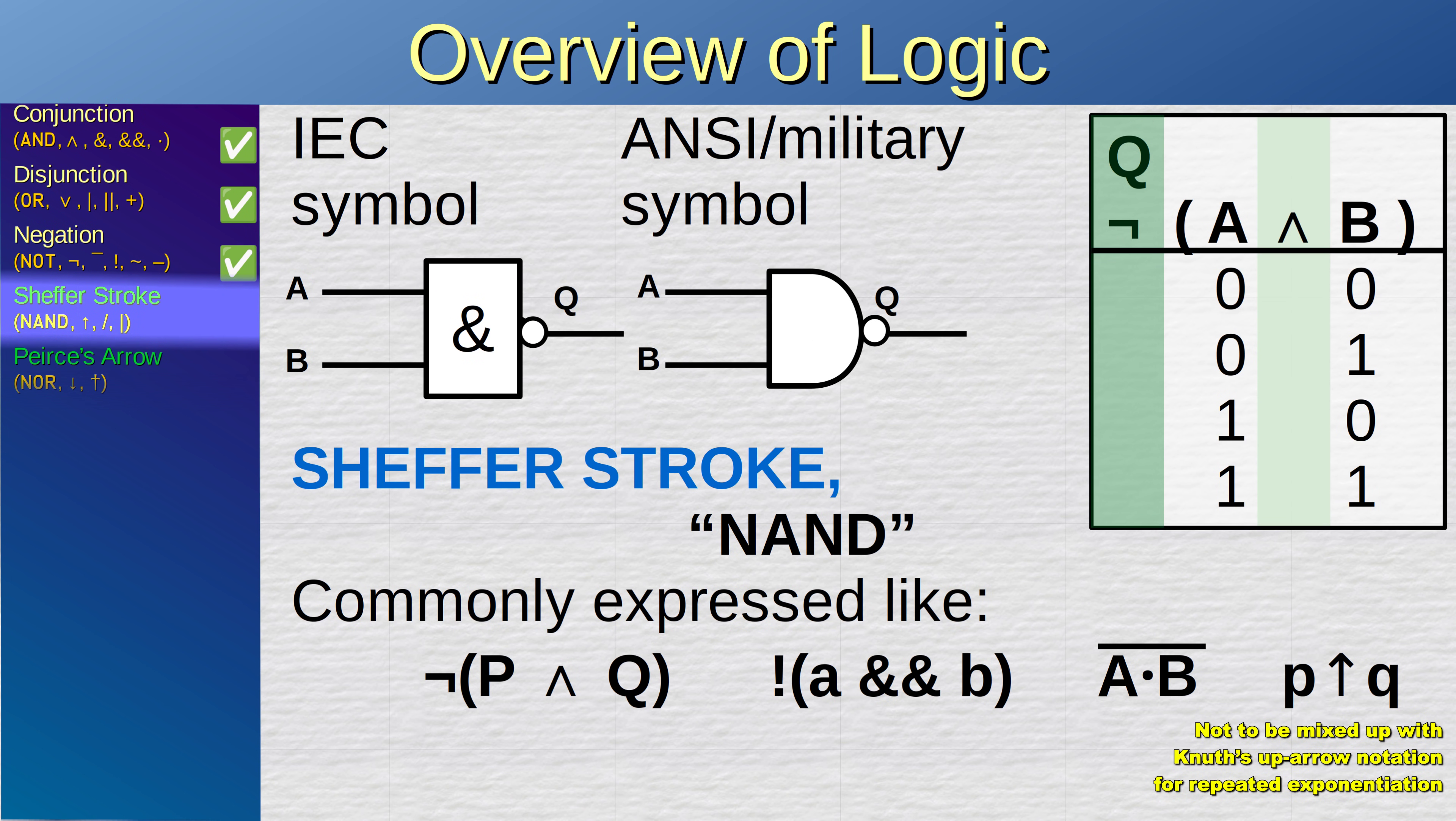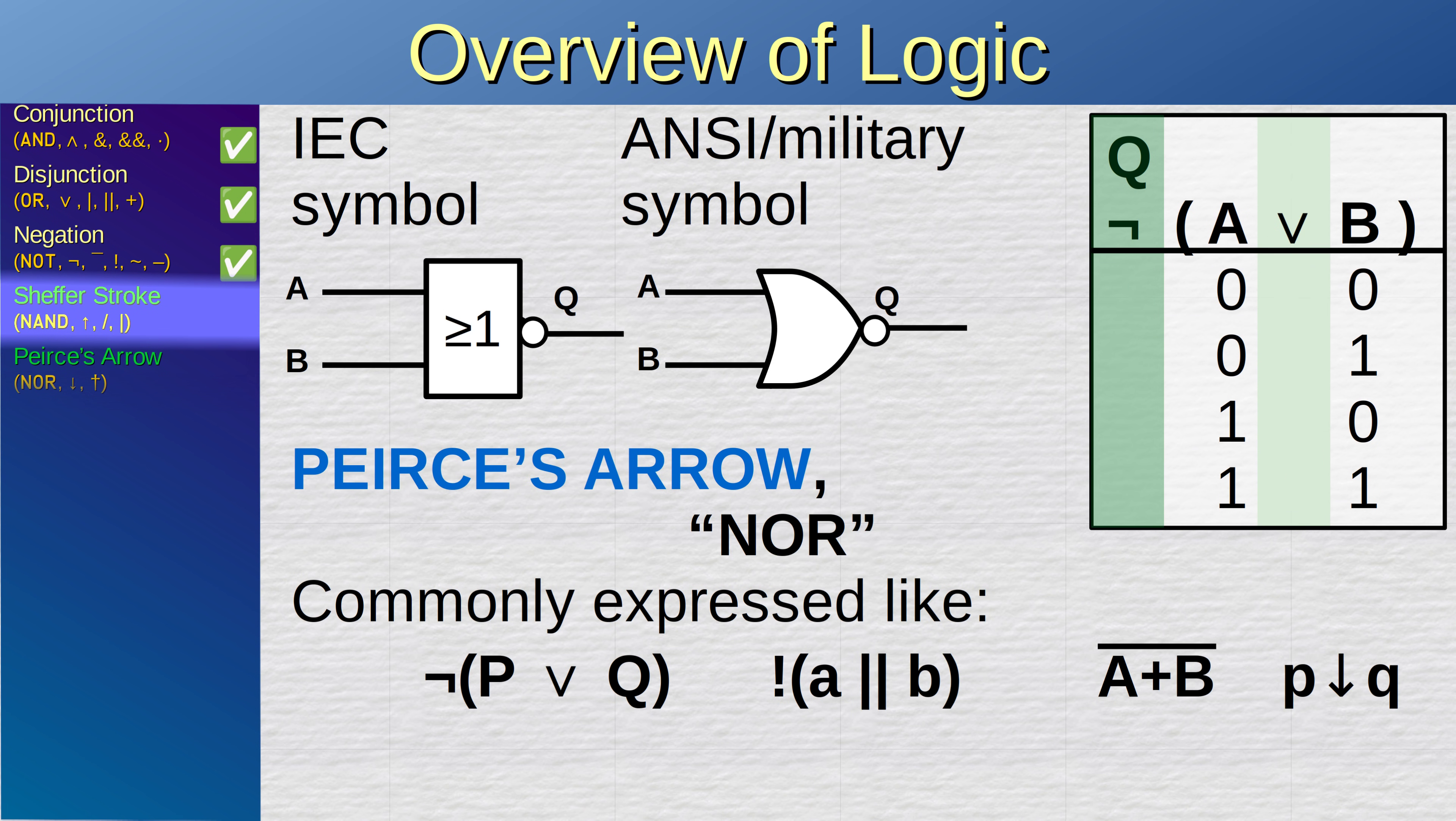The Schiffer stroke, better known as the NAND gate, is a combination of the conjunction and the negation. It works exactly like the AND gate, but its output is inverted. In other words, its output is always true, unless all of its inputs are true. The same goes for the Pierce's arrow, better known as the NOR gate, which is a combination of the disjunction and the negation. Its output is only true if all of the inputs are false. It's like an inverted AND gate!